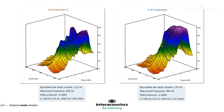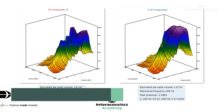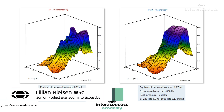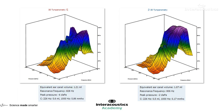Reviewing the wideband tympanometry results with Lillian: there is a little bit more purple on the left than on the right. To the degree seen here, this would not be considered an asymmetry. There may be slightly more energy being absorbed by the left ear relative to the right, but the ear canal volume, resonance frequency, and peak pressure are really close to normal for this patient. The 3D graphs also indicate this, so overall it looks normal.